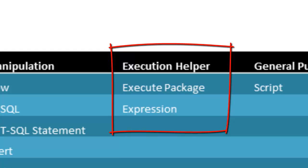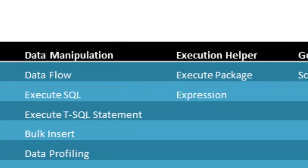We have execution helper tasks like execute package task and expression task. The execute package task lets us execute another package as part of the current package — essentially calling another package. The expression task uses expressions to calculate and fill values into variables, which we then use elsewhere. I will talk about expressions in detail separately.